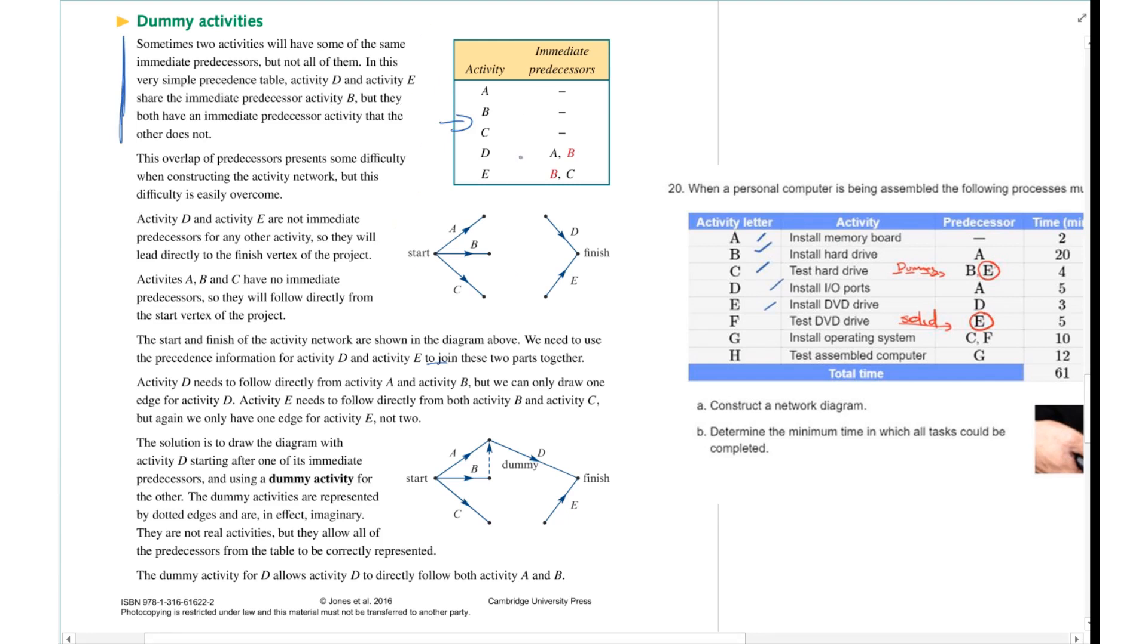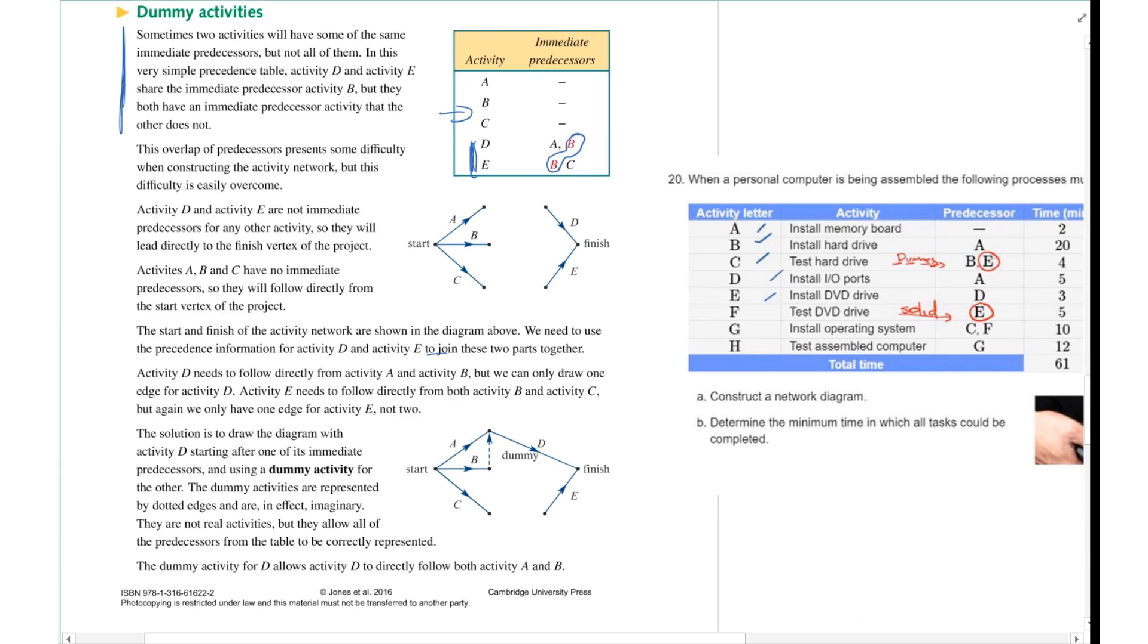Now what I'm looking at here is this bit, and the reason I'm looking at that is it's just a little summary of what's going on because it relates to this table here. In this predecessor table we can see activity D and E, both have a predecessor named B. But they also have another predecessor.